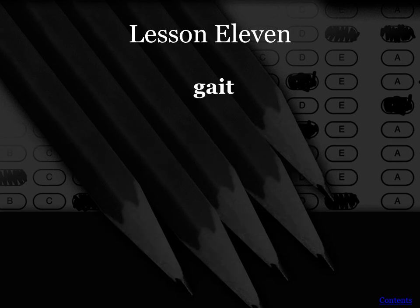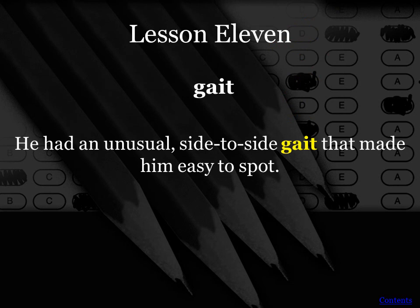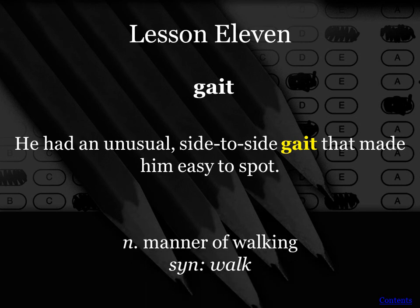Our next word is gait — also a noun. He had an unusual side-to-side gait that made him easy to spot. Gait is simply the way you walk, your manner of walking. A synonym is walk. I know the gait of everyone in my family — if I'm at home and hear someone come in through the garage and walk down the hallway, I can tell by their footsteps whether it's my husband, my daughter, or my son. I'm sure you can identify the gait of your family members and friends as well.